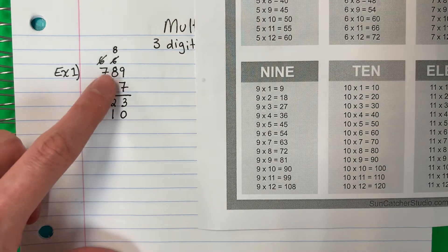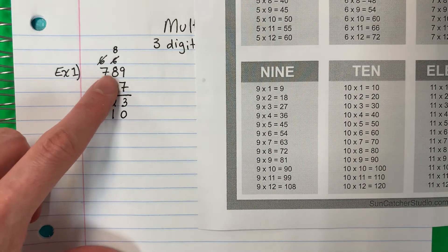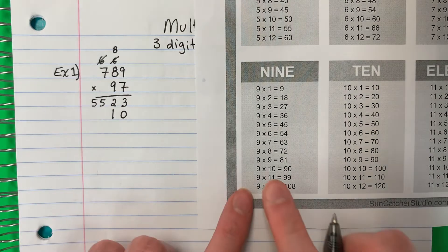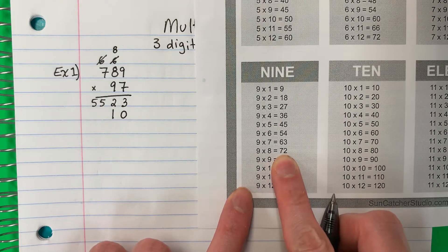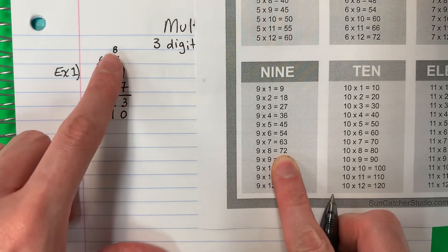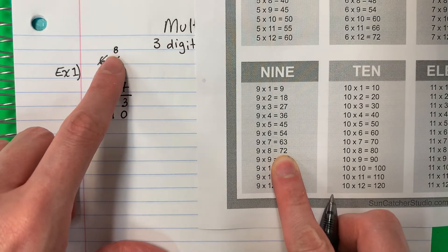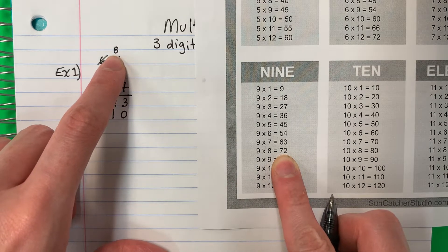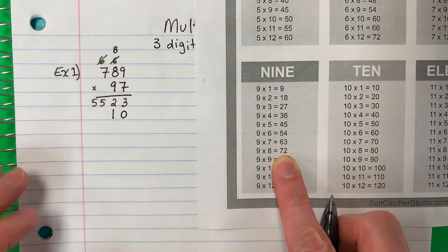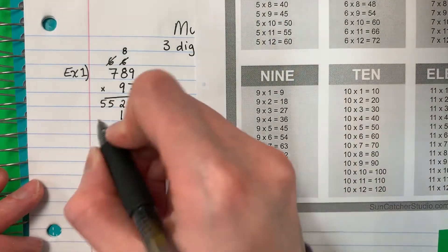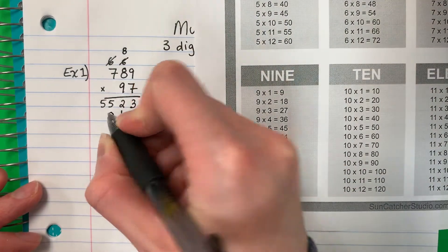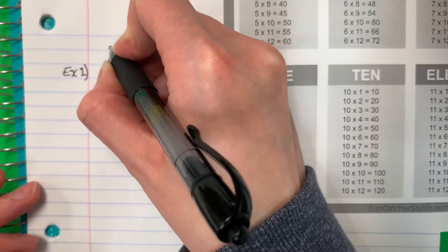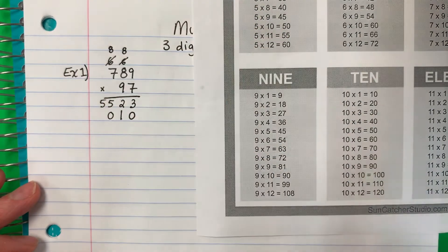Now nine times eight. Nueve por ocho. Nine times eight is seventy-two. Plus eight. Mas ocho. Seventy-two plus eight is eighty. Ochenta. So you put a zero here and an eight here. Cero allí, y ocho allí.